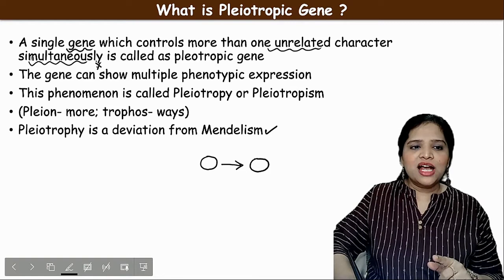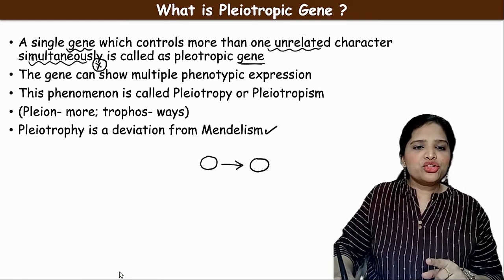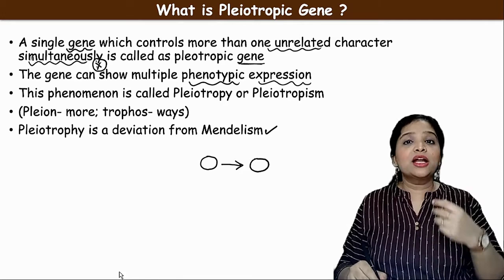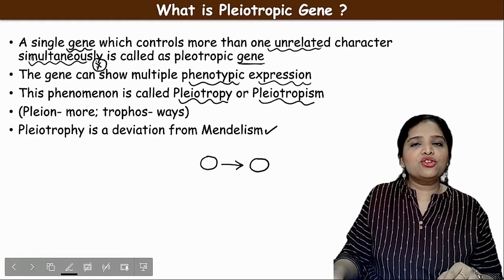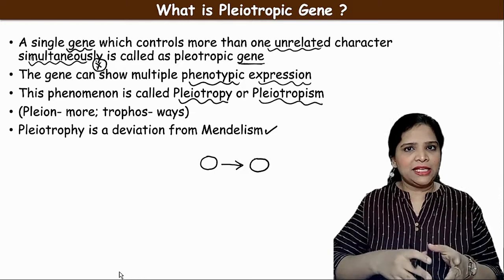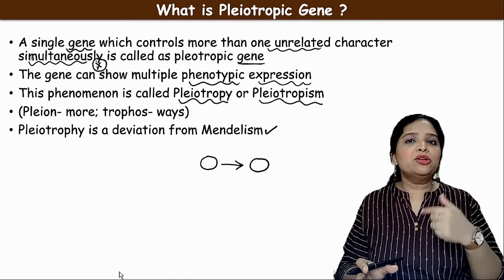The gene is able to show multiple phenotypic expressions — different characters controlled by the gene could be expressed phenotypically. This phenomenon is called pleiotrophy or pleiotrophism. These two words have the same meaning. The genes which execute this phenomenon are called pleiotropic genes.